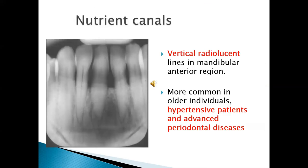Here we have a radiograph showing very interesting features. You see radiolucent lines running down from the middle third region of the alveolar bone further downwards. These landmarks are in fact the nutrient canals, which are prominent in certain conditions such as hypertensive patients, calcium deficiency, and advanced periodontal disease.